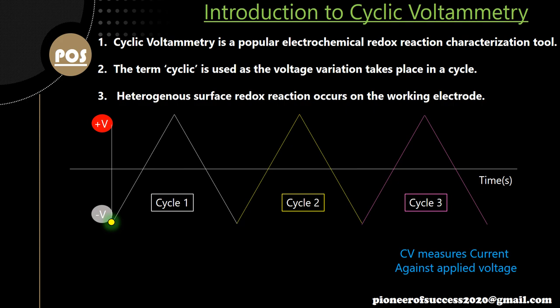What is CV used for? CV is used for characterizing an electrochemical redox reaction that happens on a working electrode. In a typical CV experimental setup, you have three electrodes. On the working electrode, your main reaction happens, and the reaction type is heterogeneous. In a heterogeneous surface reaction, your electrode materials are pasted on top of the electrode, an electrolyte is in contact with it, and the reaction happens at the interface when you apply an external electric field as a potential.